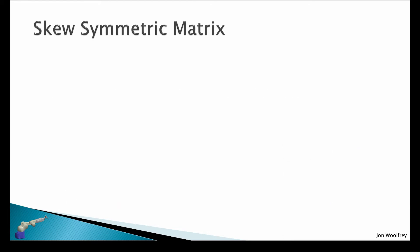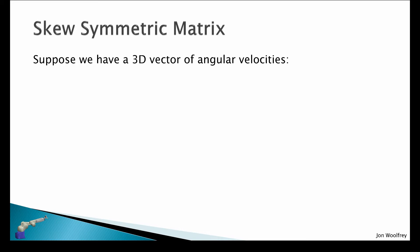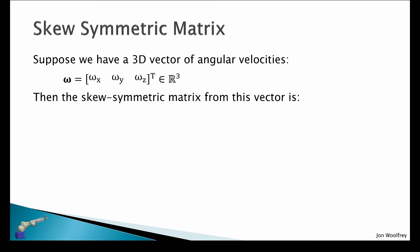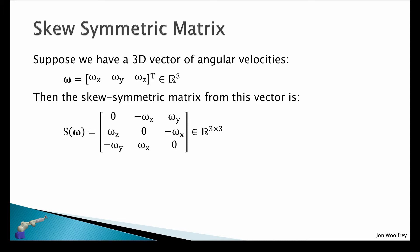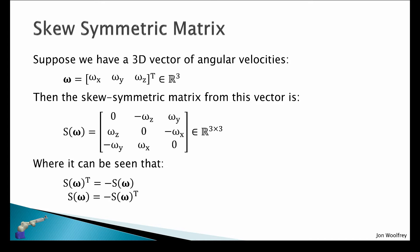Let's look at what a skew symmetric matrix is. Suppose we have a 3D vector of angular velocities, omega, given by individual velocities about the x, y, and z axes — omega_x, omega_y, and omega_z. The skew symmetric matrix from this vector is a 3×3 matrix with zeros across the diagonal and the x, y, and z elements on the off-diagonal elements. It can be seen that the transpose of this skew symmetric matrix equals its negative, and the skew symmetric matrix equals the negative transposed.